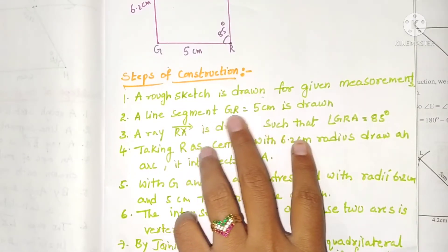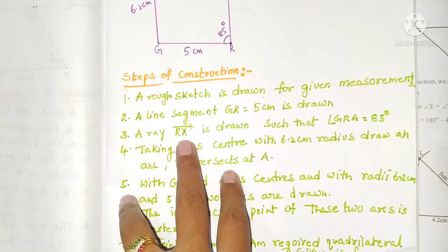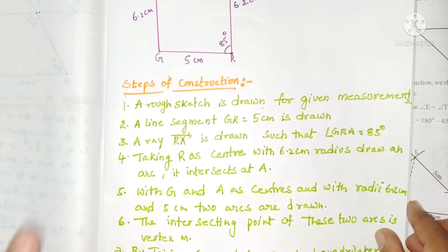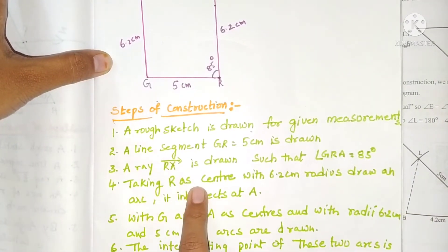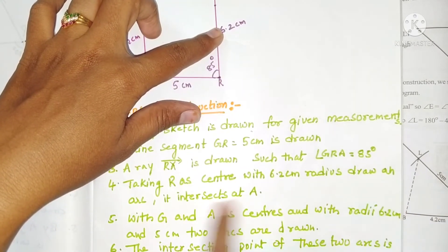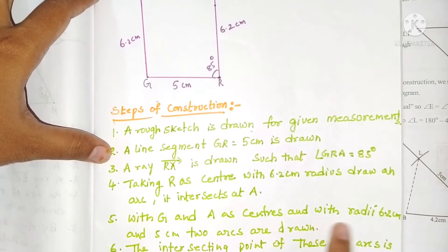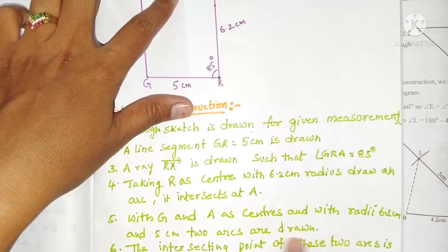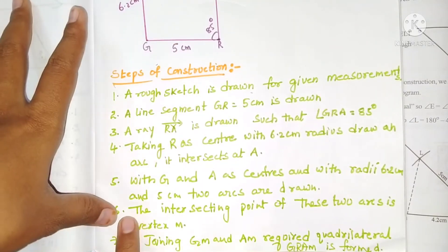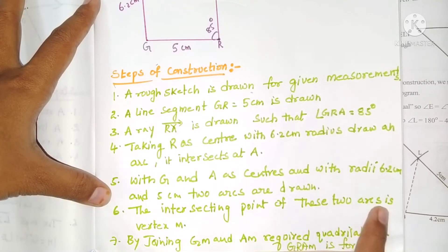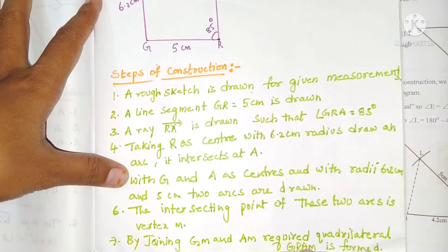Steps of construction: A rough sketch is drawn for the given measurements. A line segment GR = 5 centimeters is drawn, and a ray RX is drawn such that angle GRA = 85 degrees. Taking R as center with 6.2 centimeters radius, an arc is drawn intersecting at A. With G and A as centers and radii 6.2 centimeters and 5 centimeters respectively, two arcs are drawn. Their intersecting point is vertex M. By joining GM and AM, the required quadrilateral GRAM is formed.